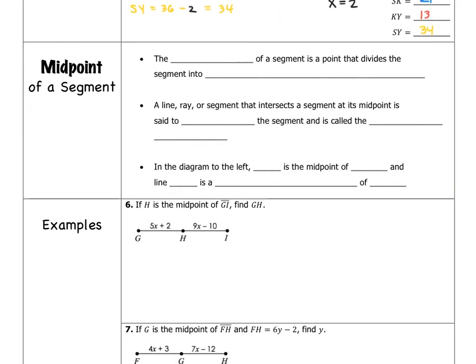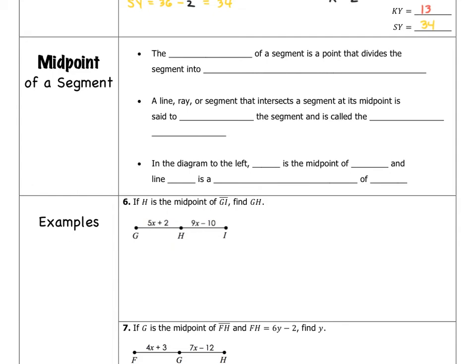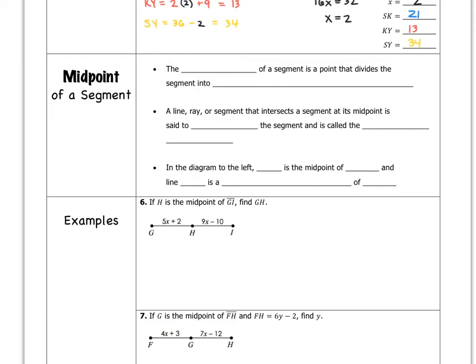The next thing I want to talk about in this video is the midpoint of a segment. The midpoint of a segment is a point that divides the segment into two congruent segments. A line, a ray, or a segment that intersects a segment at its midpoint is said to bisect the segment. If you hear the word bisect, it means one of those three figures is intersecting another segment at its midpoint, and that figure is known as the segment bisector.